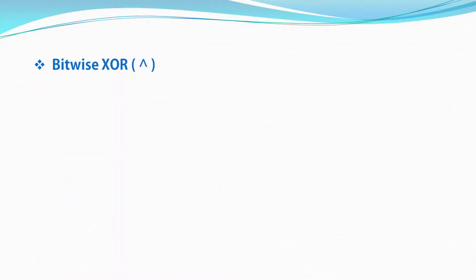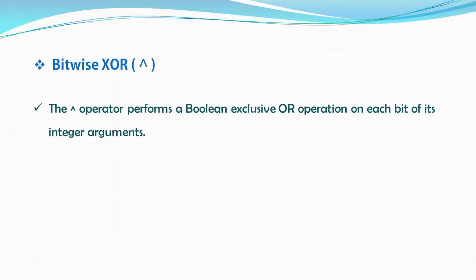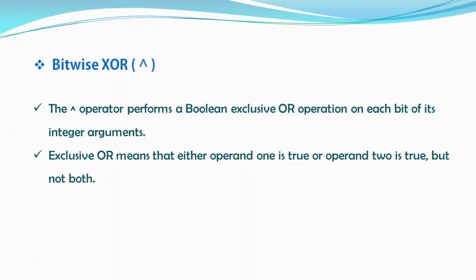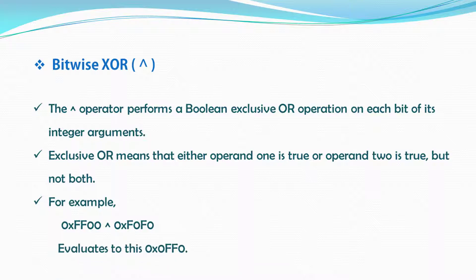The next bitwise operator is XOR. The XOR bitwise operator performs a boolean exclusive OR operation on each bit of its integer argument. Exclusive OR means that either operand one is true or operand two is true, but not both. For example, with the XOR operator, when you execute this you will get this hexadecimal value.